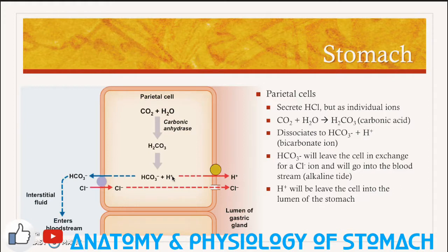Both ions leave the cell in opposite directions. The bicarbonate ion leaves the cell going to the interstitial fluid in exchange for a chloride ion. Once in the interstitial fluid, it can enter the bloodstream — this is called the alkaline tide because it significantly raises the pH of the blood. The chloride ion diffuses through the parietal cell into the lumen of the stomach, and the hydrogen ion also leaves the parietal cell into the lumen. Once both the hydrogen and chloride ions are in the lumen, they join together to form hydrochloric acid.